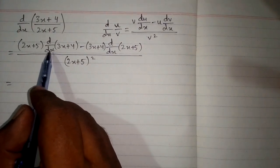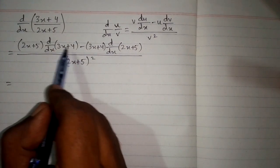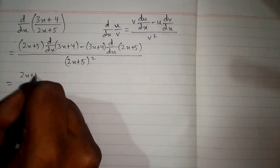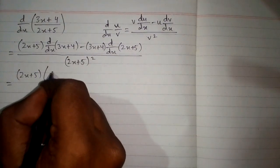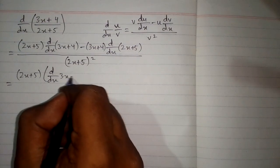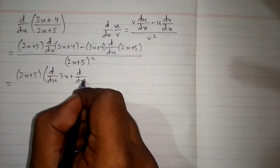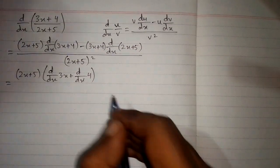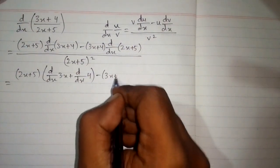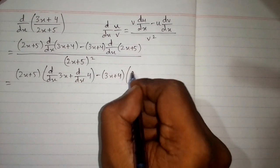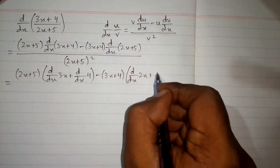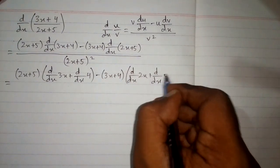Now we will write the derivative on both the terms inside the bracket. So we have (2x + 5) times [d/dx of 3x + d/dx of 4] minus (3x + 4) times [d/dx of 2x + d/dx of 5].